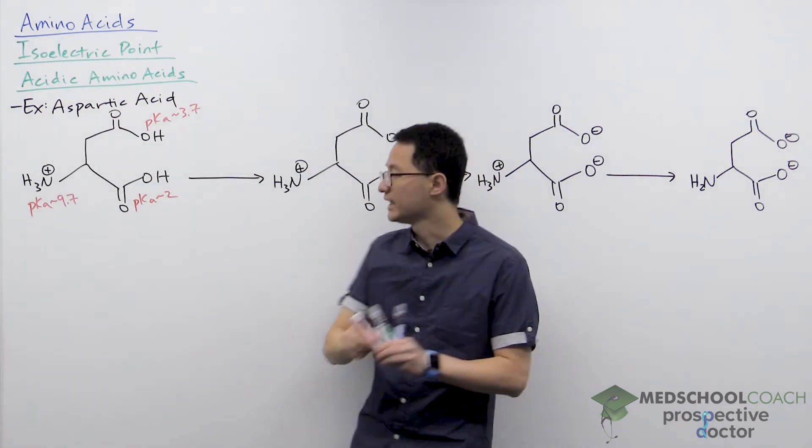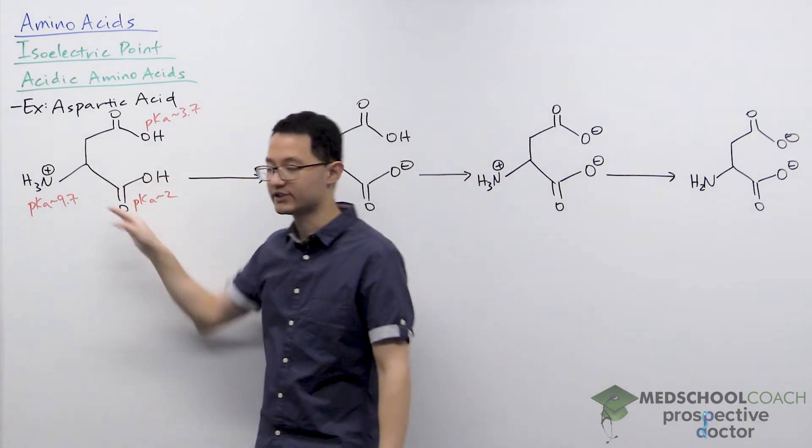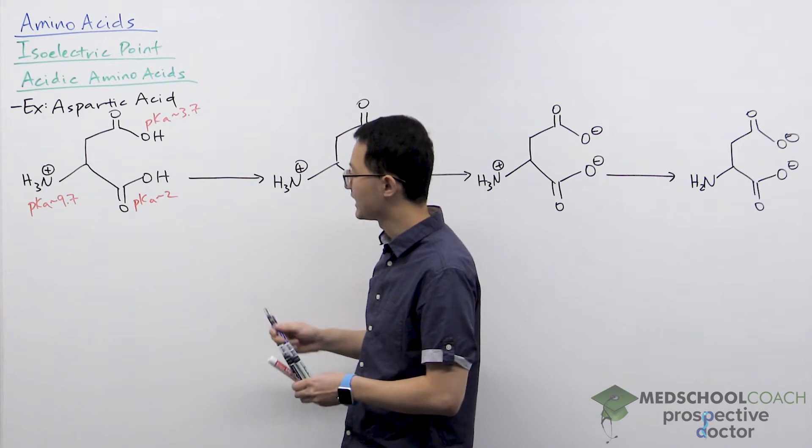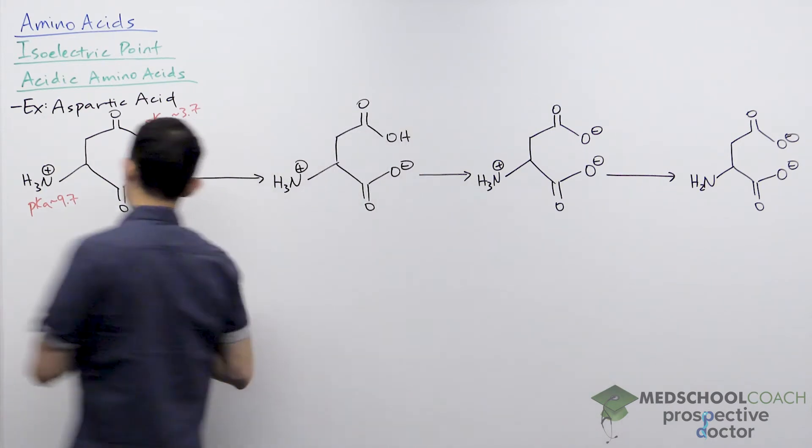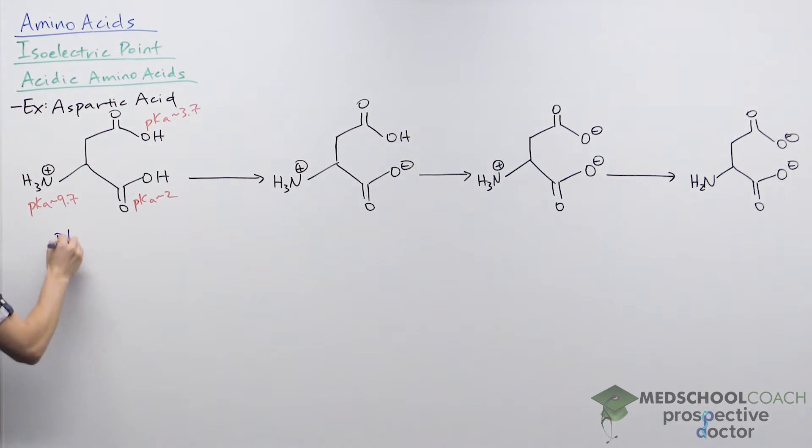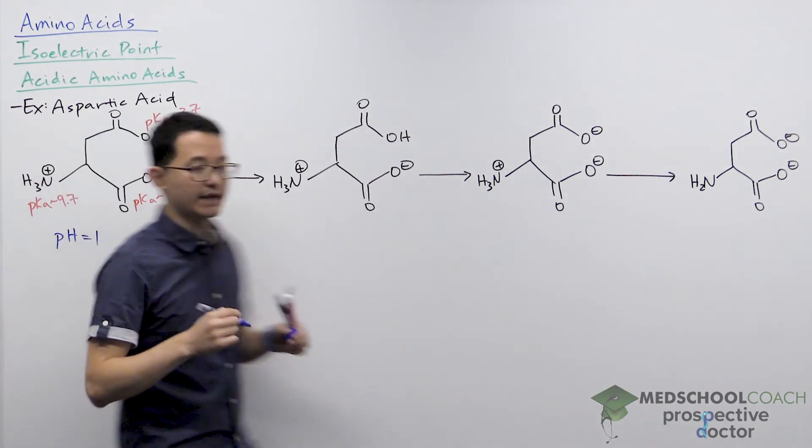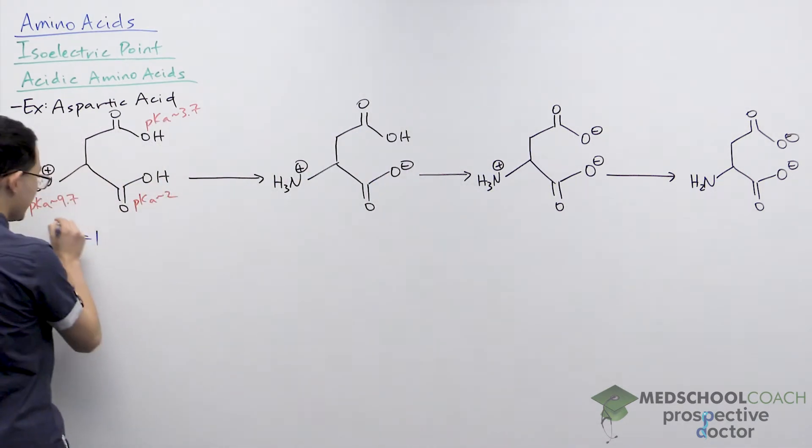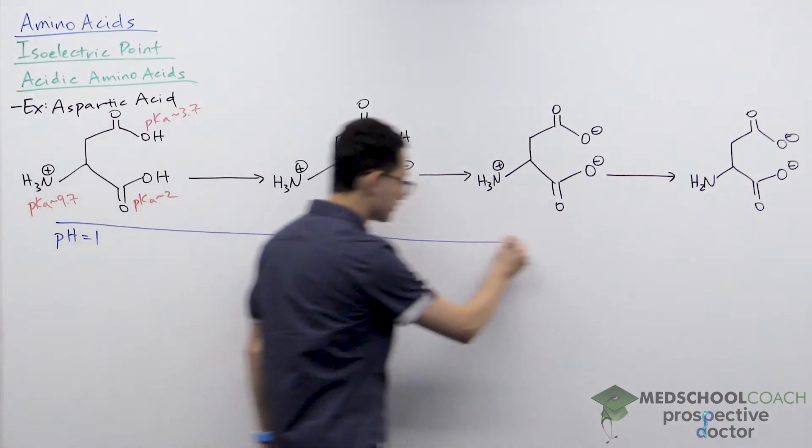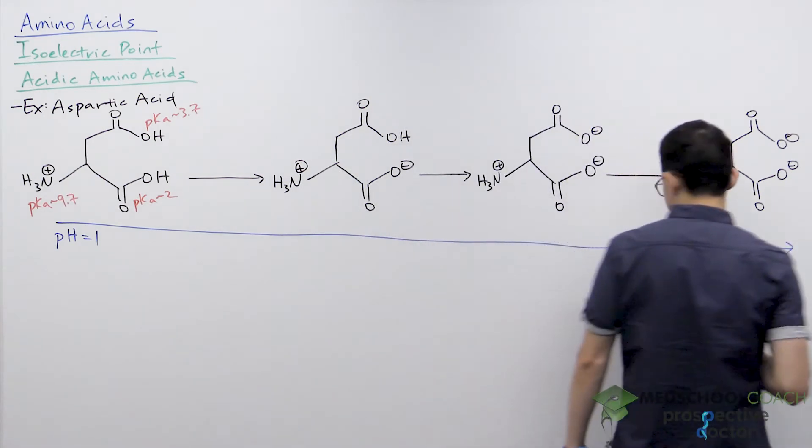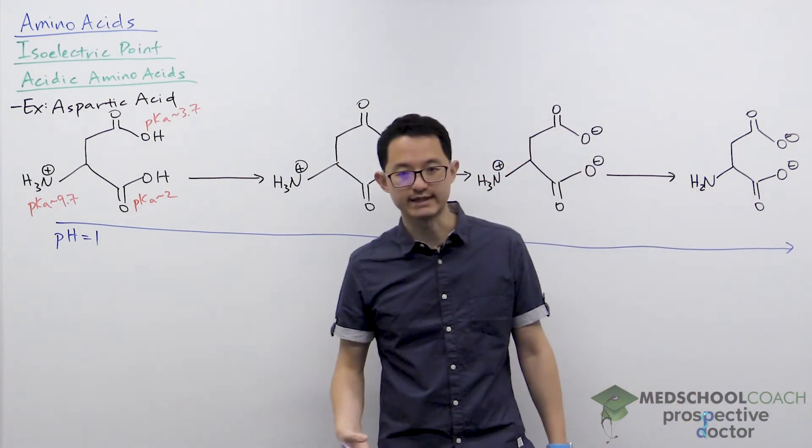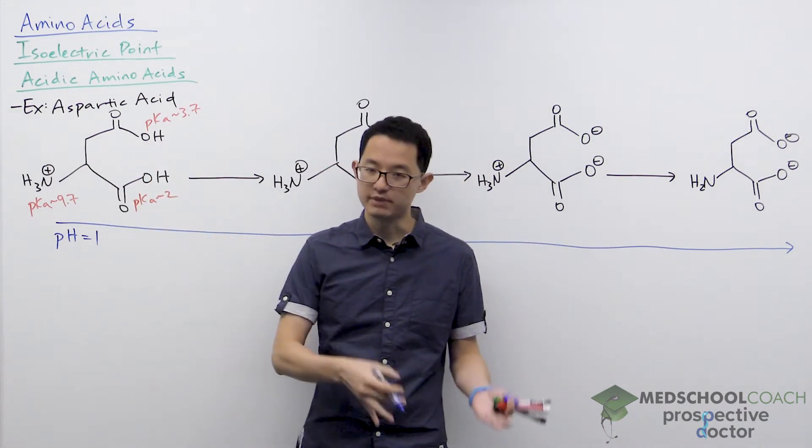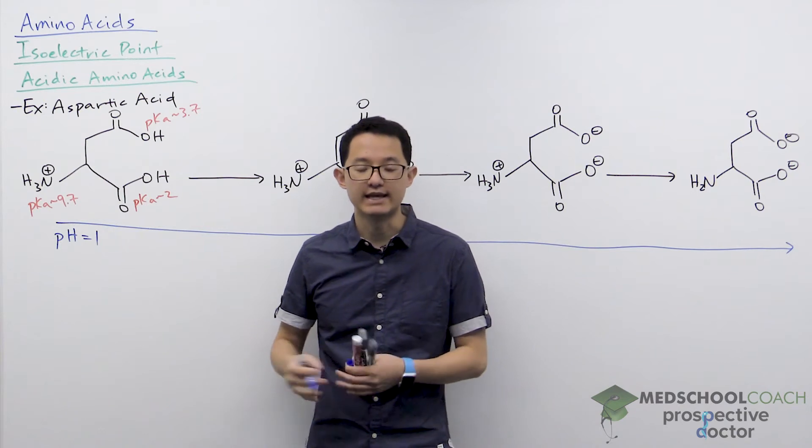So again, if we're starting in a situation where all three of these groups are in their protonated states, that would mean that we're at a very low pH value, a pH value lower than all of these pKa values. And what we're going to do is start from a low pH value and gradually increase the pH. As the solution becomes progressively more basic, these different acidic functional groups will become deprotonated once the pH exceeds their pKa values.